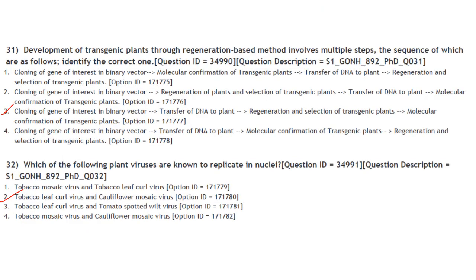Development of a transgenic plant through regeneration-based methods involves multiple steps in this sequence: cloning of the gene of interest in a binary vector, transfer of DNA to the plant, regeneration and selection of transgenic plants, and molecular confirmation of transgenic plants. Answer is option 3.